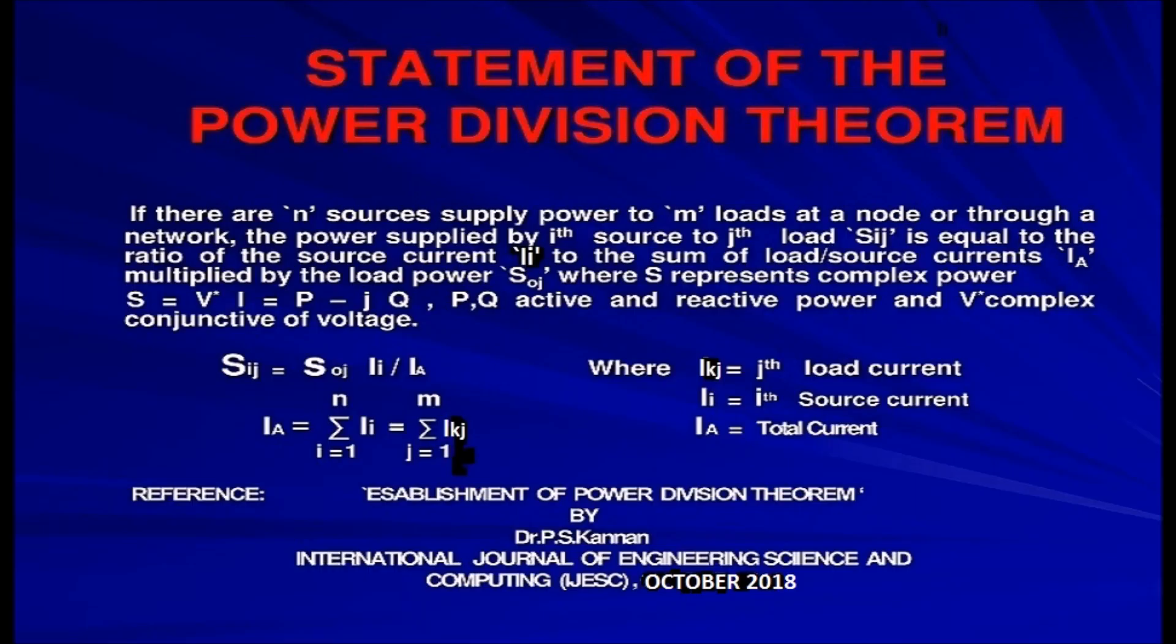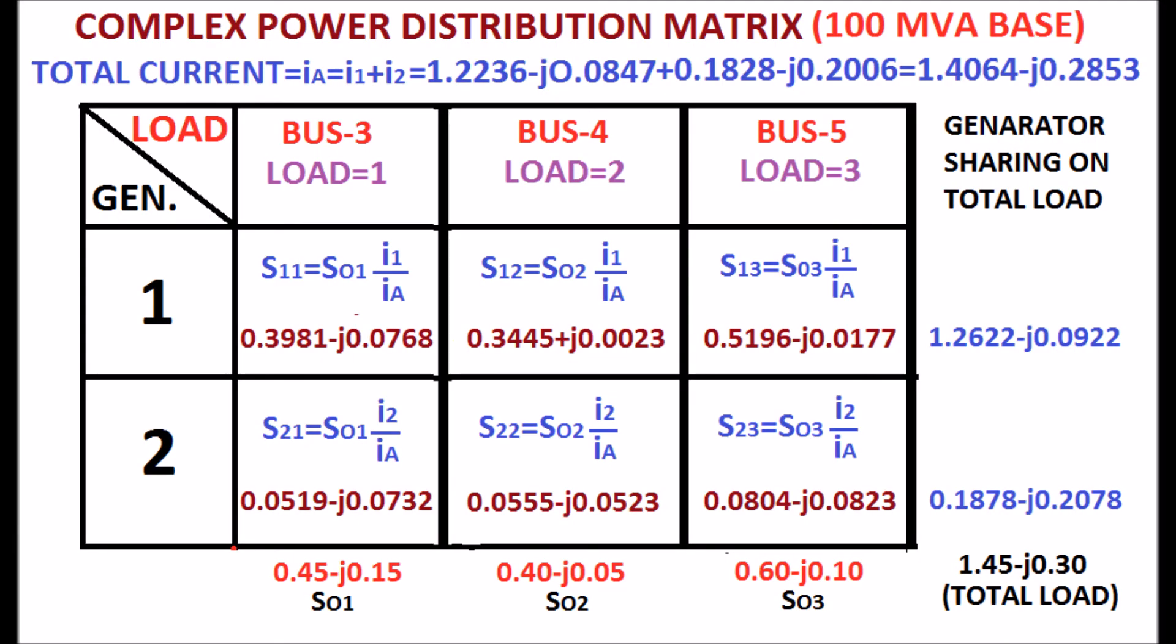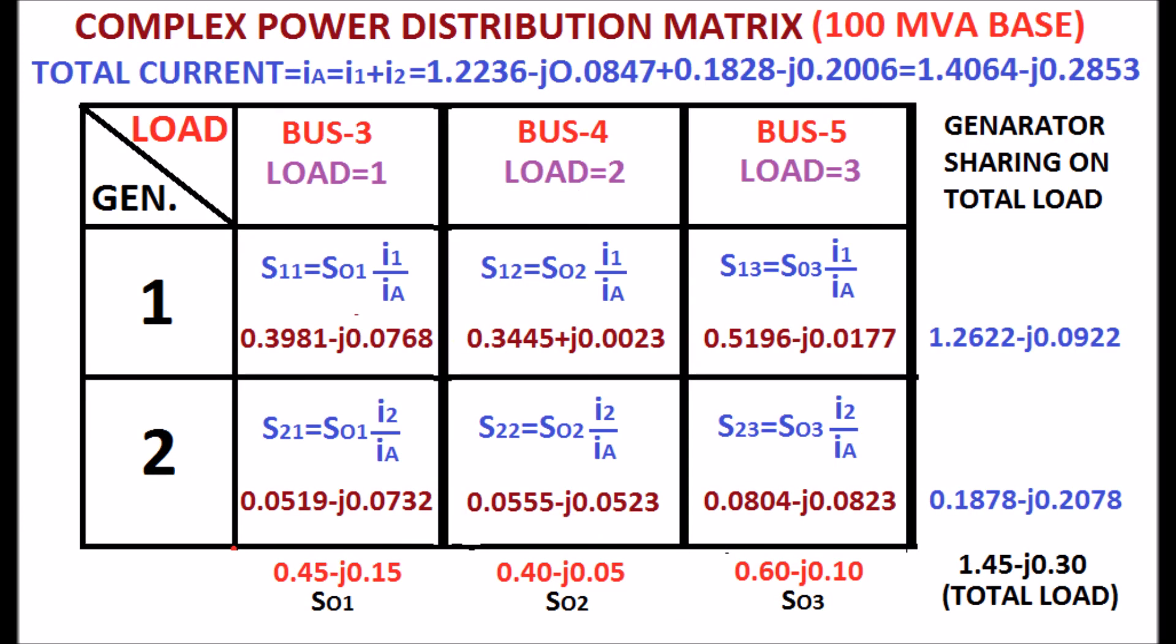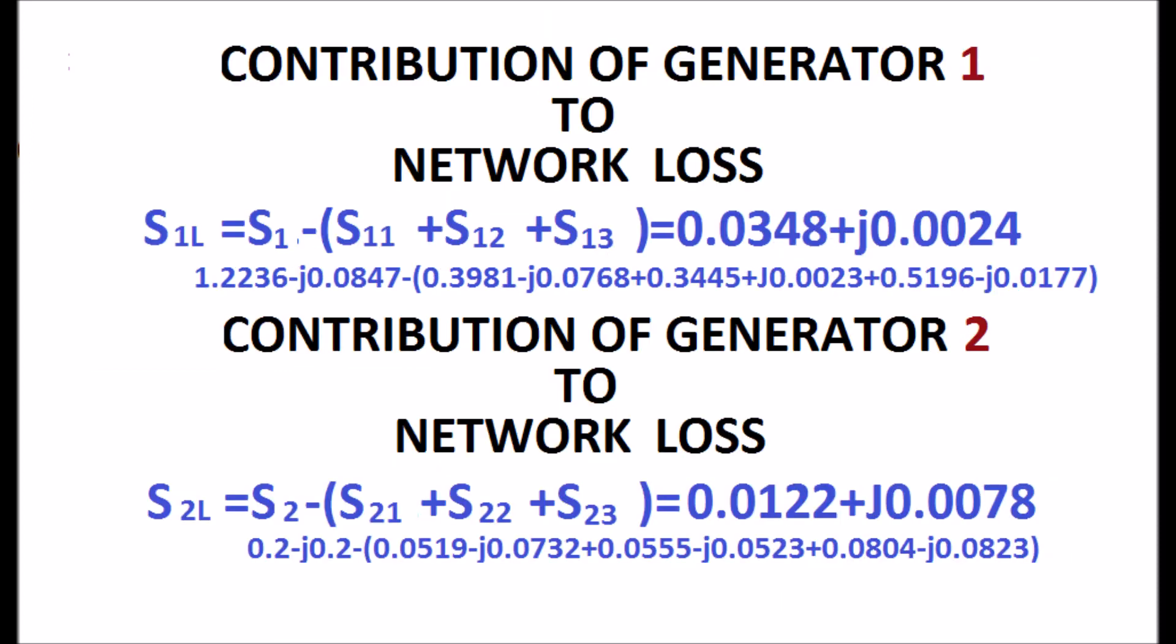As a conclusive remark, the power division theorem gives the correct result when establishing the complex power distribution matrix of a power system at a particular operating point, which gives the sharing of each generator to each load and also the contribution of each generator to the network losses.